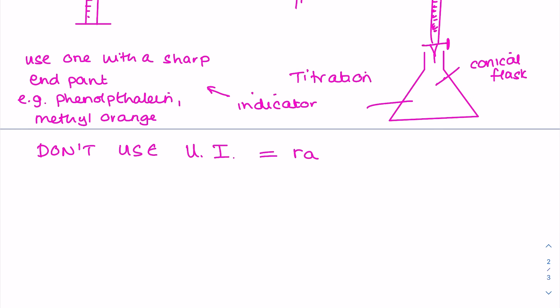Don't use universal indicator here in a titration because remember it has a range of colors which start at red for something which is very acidic, so around pH 1, goes all the way through to green which shows a neutral solution, pH 7, and then kind of a blue shade for very alkaline solutions, so about pH 13. So do not use universal indicator in a titration.